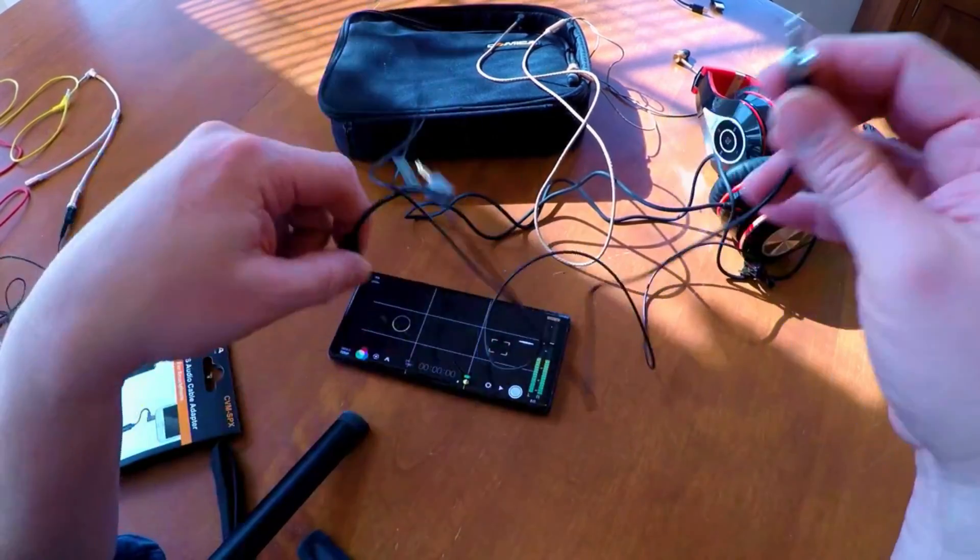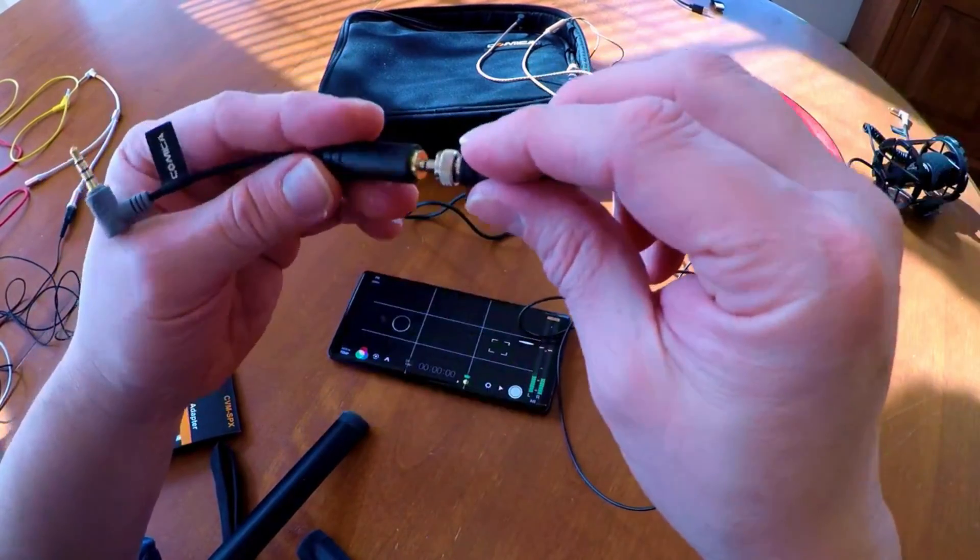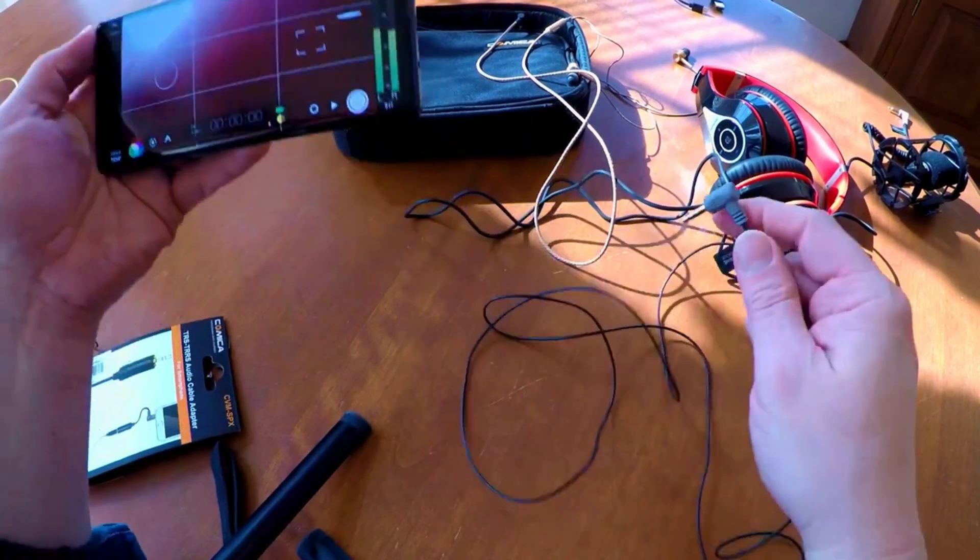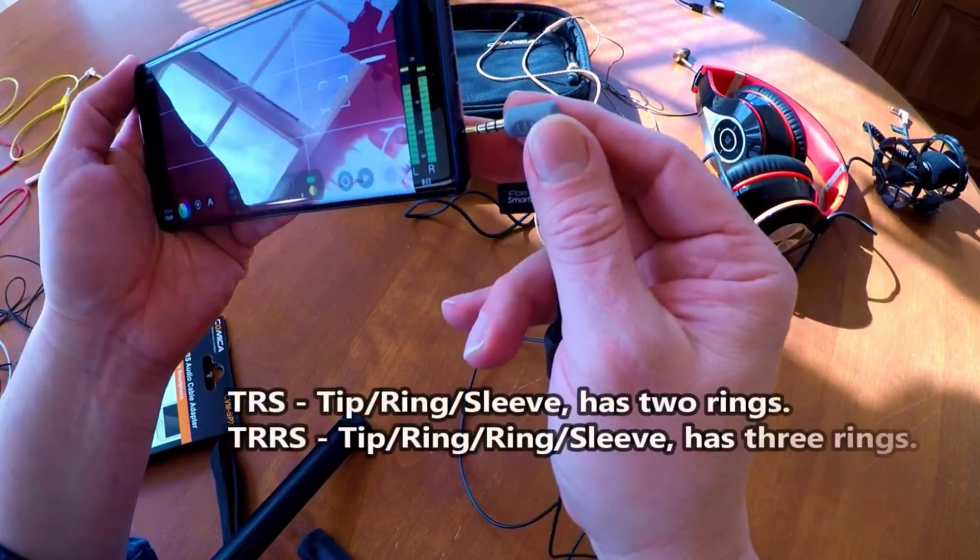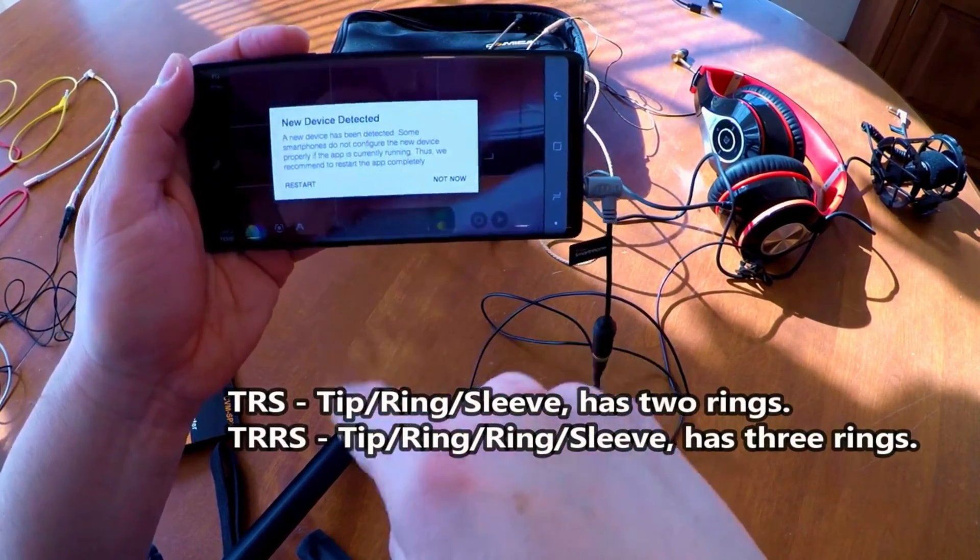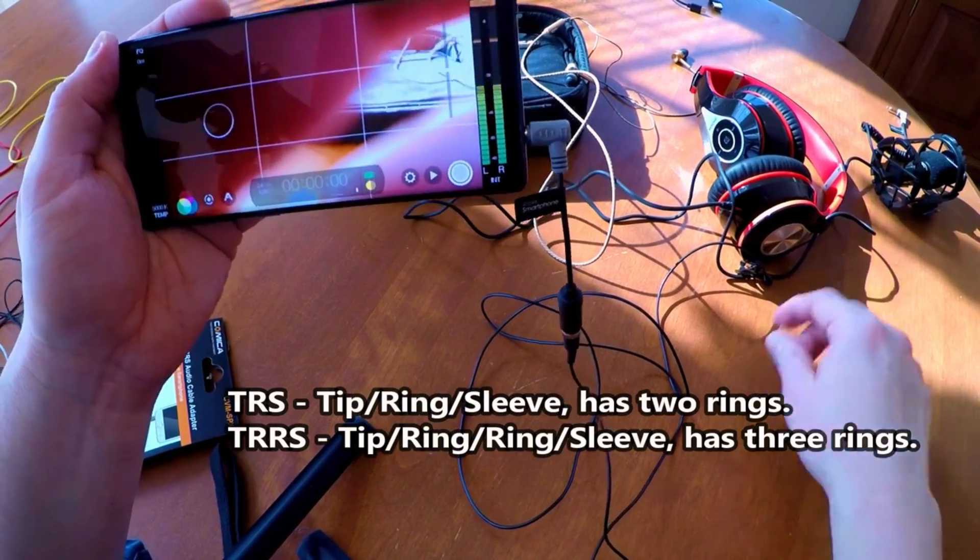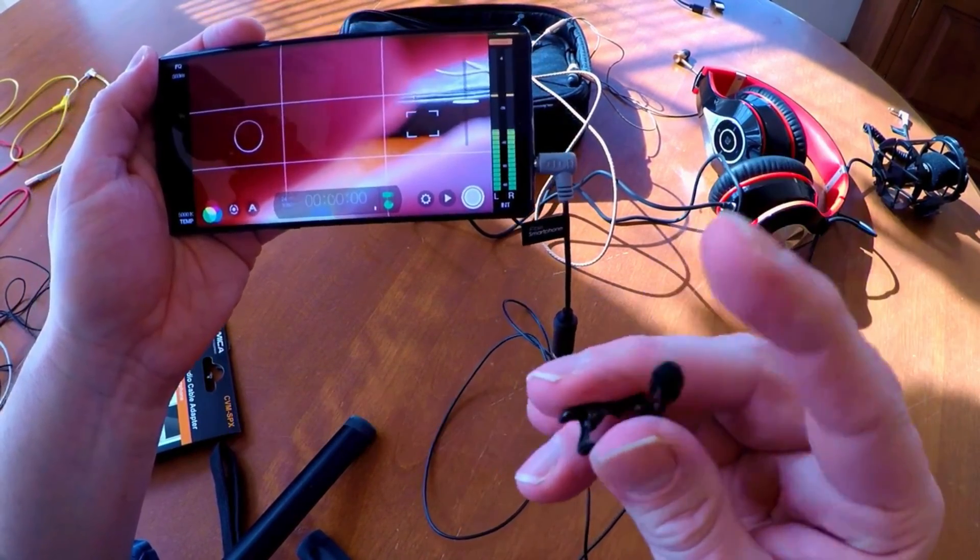That's where you need to use a TRS to TRRS adapter. Plug it in. This is a Comica TRS to TRRS adapter. Watch what happens when I put it in. New device detected. Restart. And now it's going to restart. And now I can use my lavalier microphone.